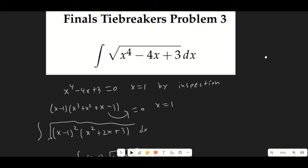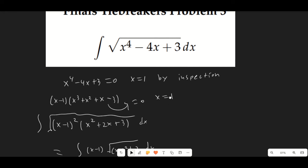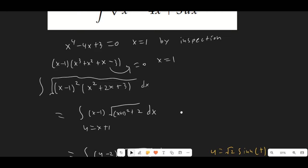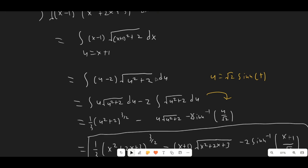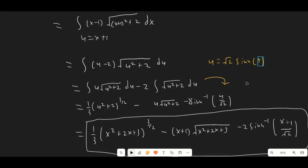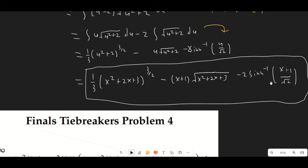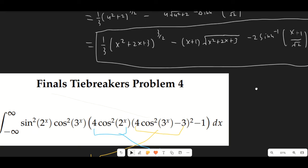Tiebreaker problem three required a lot of factoring. By inspection x=1 is a root; after factoring, x=1 is again a root, giving (x-1)² times (x²+2x+3) inside the square root. We take (x-1) outside the square root and complete the square on the inside. Letting u = x+1, we split into two integrals: the first handled by substituting v = u²+2, and the second by u = √2 sinh(t). This gives a final answer involving inverse hyperbolic sine, equivalent to the natural logarithm form used in the bee.